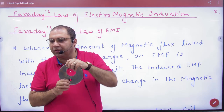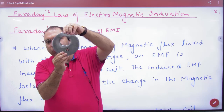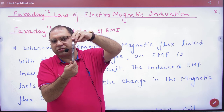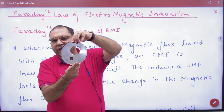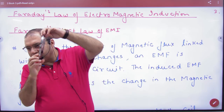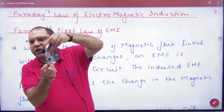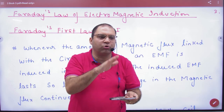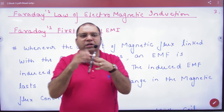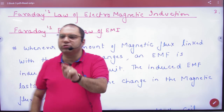When lines pass perpendicularly, flux is at maximum. As the angle changes, flux changes — from 0 to 100, increase and decrease. The flux goes from 0 to 1, then 1 to 2, and so on. B·A·cos(φ) — with values changing like 2, 3, 4 — flux is continuously changing.